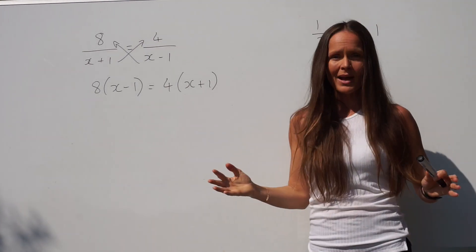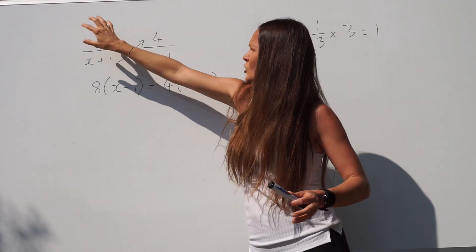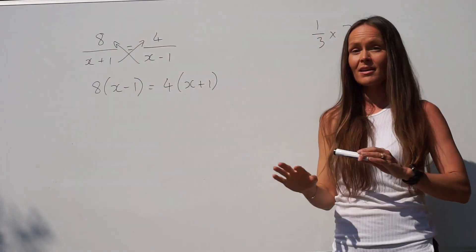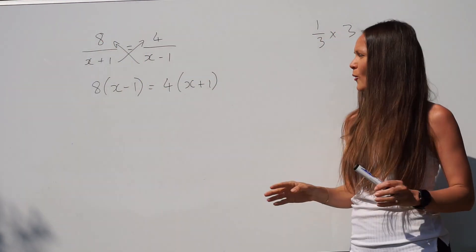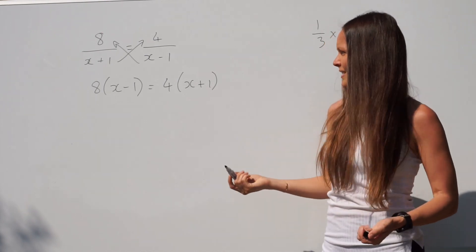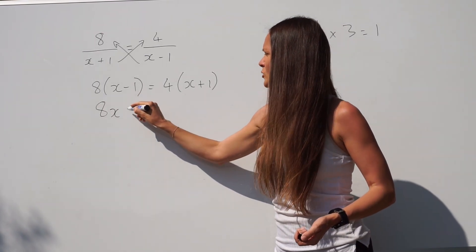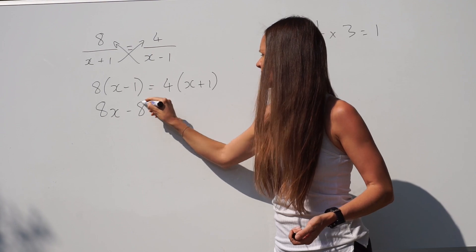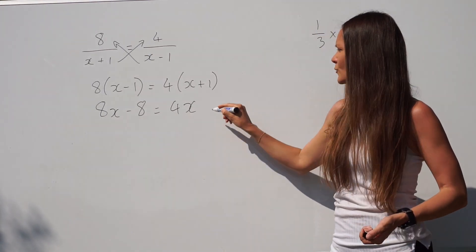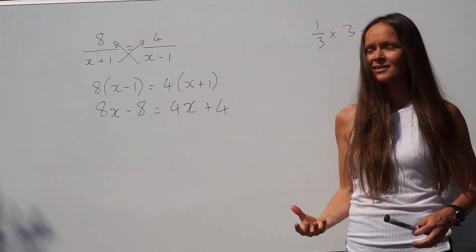If you just want an easy way of remembering it, you just multiply this numerator with this denominator and this numerator with this denominator — no more fractions. Next, you need to expand the brackets. So 8 multiplied by x is 8x, 8 multiplied by 1 is negative 8, 4 multiplied by x is 4x, and 4 multiplied by 1 is 4.